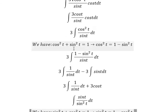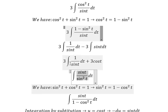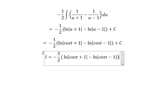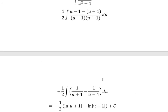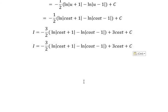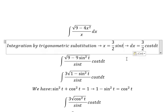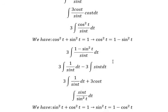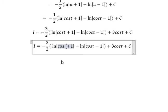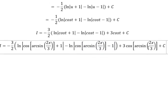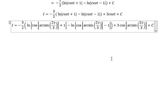We multiply the result by 3, so we get negative 3 over 2 multiplied with this expression, plus 3 cos(t) plus C. We change t back by substituting t equal to arcsin(2s over 3) and put it in here. This gives the final answer. That's the end — thank you for watching.